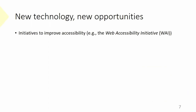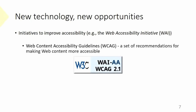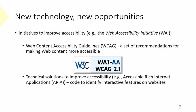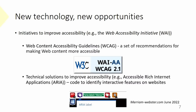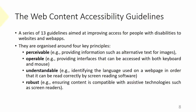Along with these new technologies, we have initiatives to improve accessibility, things like the Web Accessibility Initiative. And along with these, we have the Web Content Accessibility Guidelines, which is a set of recommendations for making web content, web pages, and web apps more accessible for people with disabilities. These are accompanied by technical solutions like ARIA labels, which is code on web pages that identifies interactive elements. Here you can see from the old version of Merriam-Webster — the menu item has been identified so that when the screen reader encounters it, it tells the user they need to interact with it.